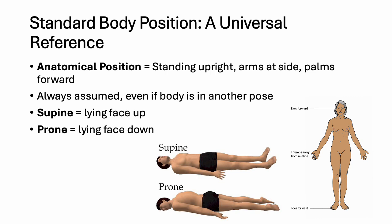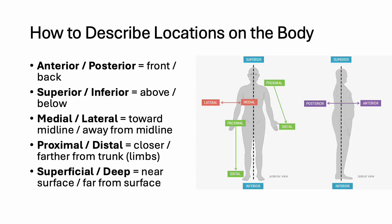Just like a map uses north as a reference, we use anatomical position as our constant reference point. No matter how someone is lying or moving, all terms assume the person is standing upright, facing forward with palms forward. This prevents confusion and keeps descriptions consistent. In anatomical position: feet on the ground, toes forward, thumbs away from the midline, palms pointing out, and eyes forward. When we say 'supine,' that means lying face up. 'Prone' means lying face down. These terms let us describe where structures are relative to one another — for example, the heart is medial to the lungs, and your wrist is distal to your elbow.